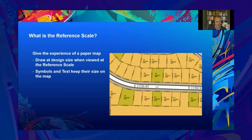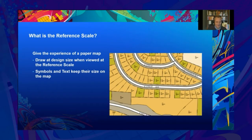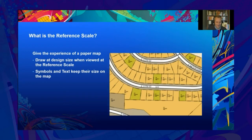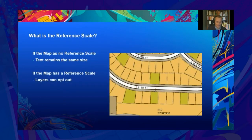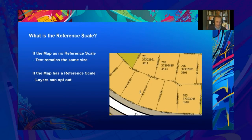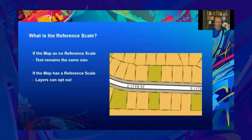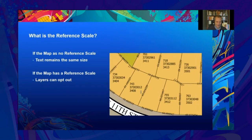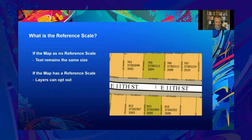One detail of map specification that is very important for labelling is the reference scale. Many published maps specify a reference scale to give the experience of a paper map. This means that the symbols and text will draw at their design size when viewed at that reference scale, and as the user zooms in or out, the text changes size on the screen, so that it always covers the same amount of the map. If the map has no reference scale — that is, if the reference scale is set to zero — then the symbols and text will stay the same size on the screen. If the map does have a reference scale, individual layers, symbols and labels can still choose to use it or not. In this example, the parcel edge measurements are honouring the reference scale, while the polygon identity text is not scaling with the map.